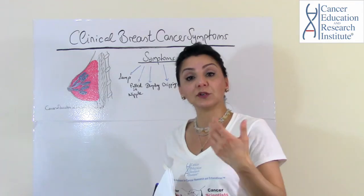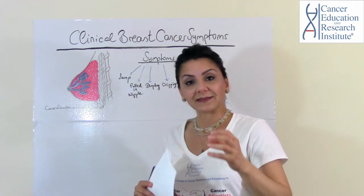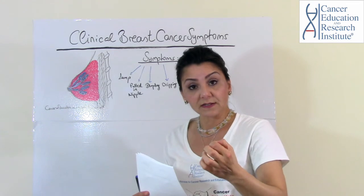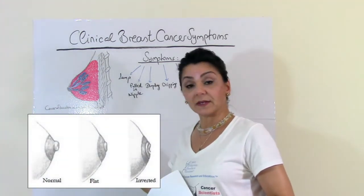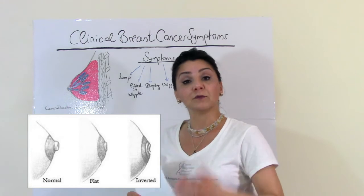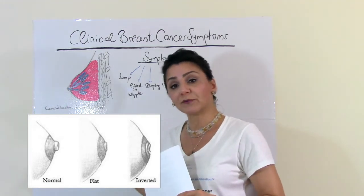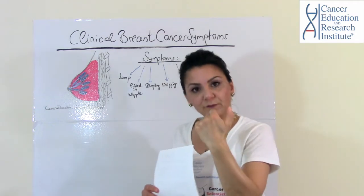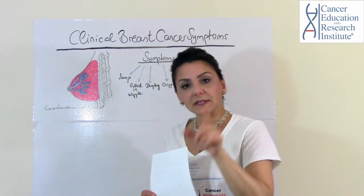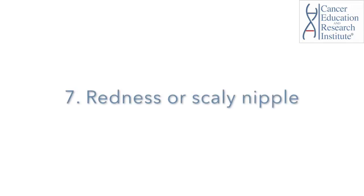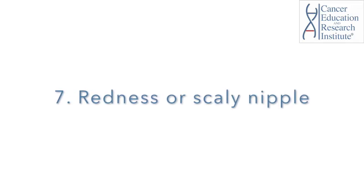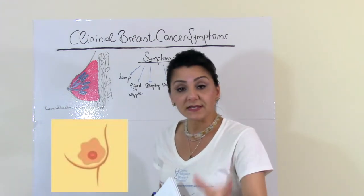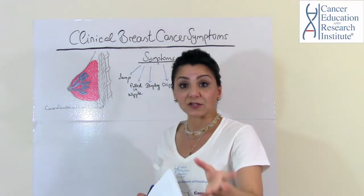If you have a newly developed nipple inversion — meaning the nipple is inverted — note that some women are born with inverted nipples, so that is normal for them. But if you find that you have a newly developed nipple inversion, then this is a breast cancer symptom. Also, if you find that you have a redness or scaly nipple, that is also a breast cancer symptom.